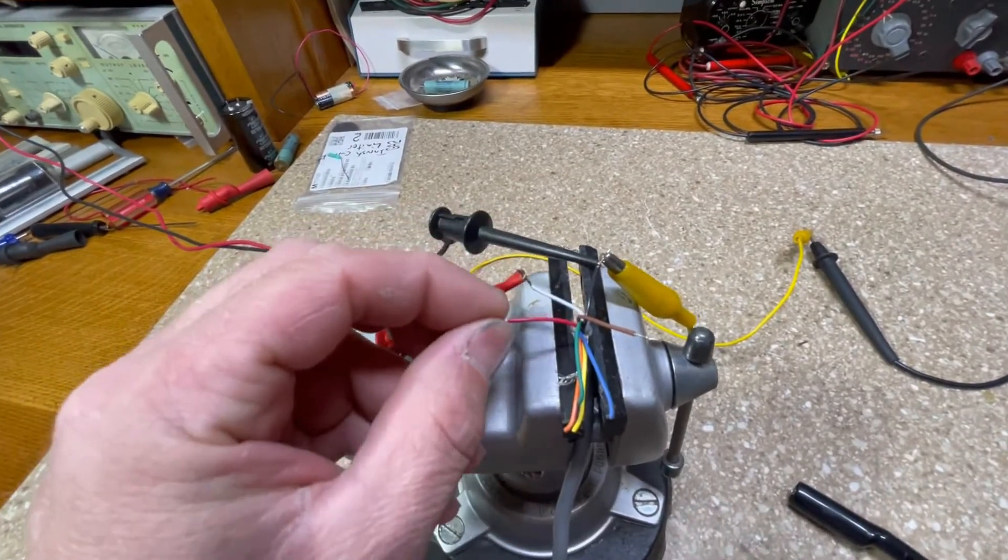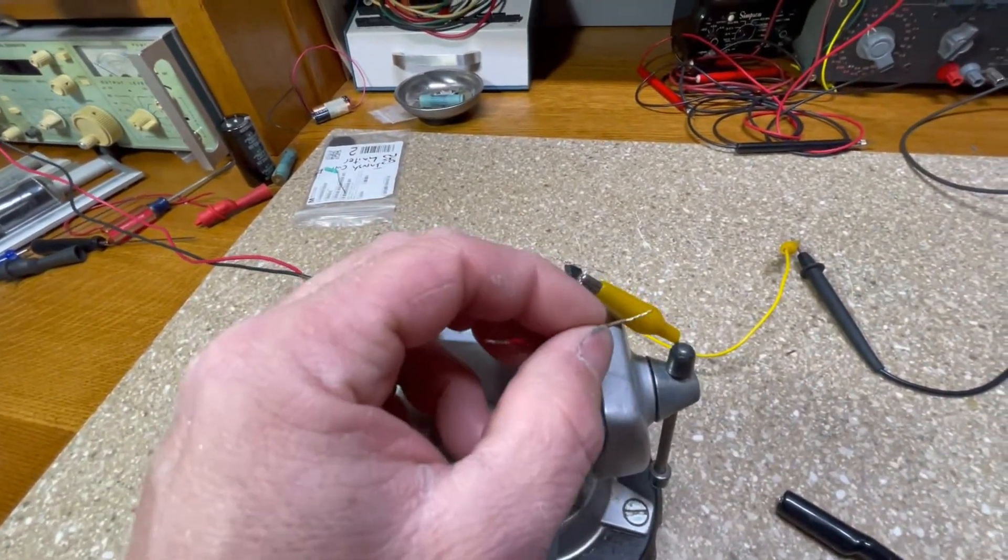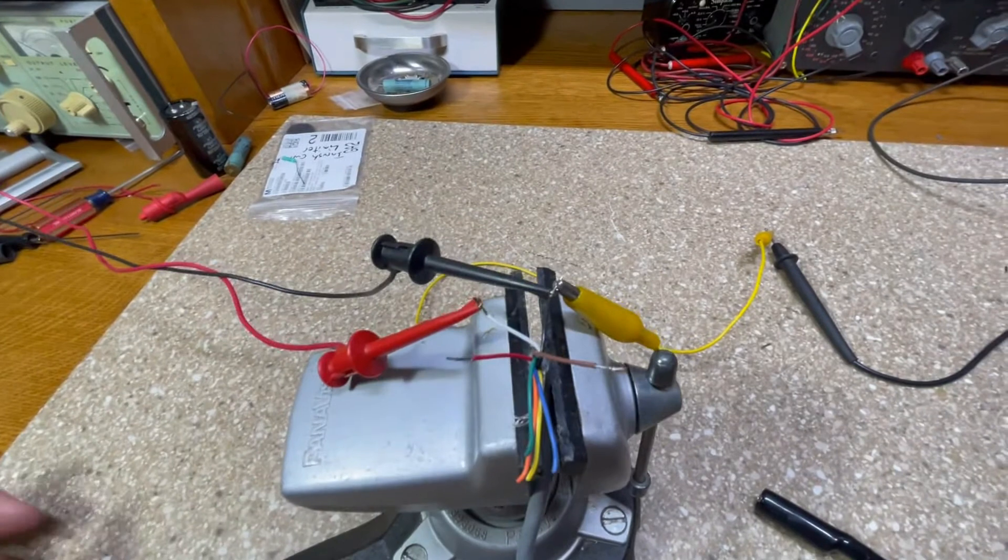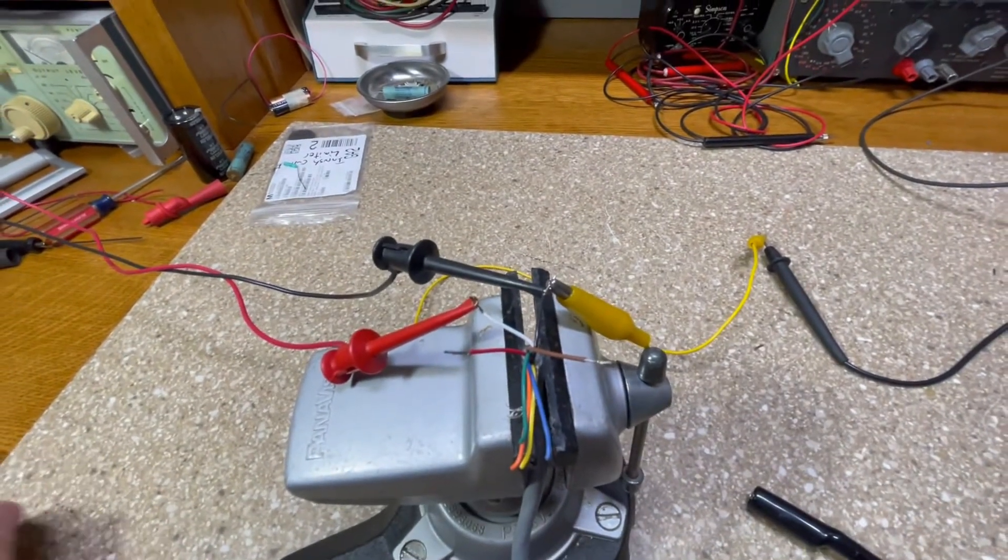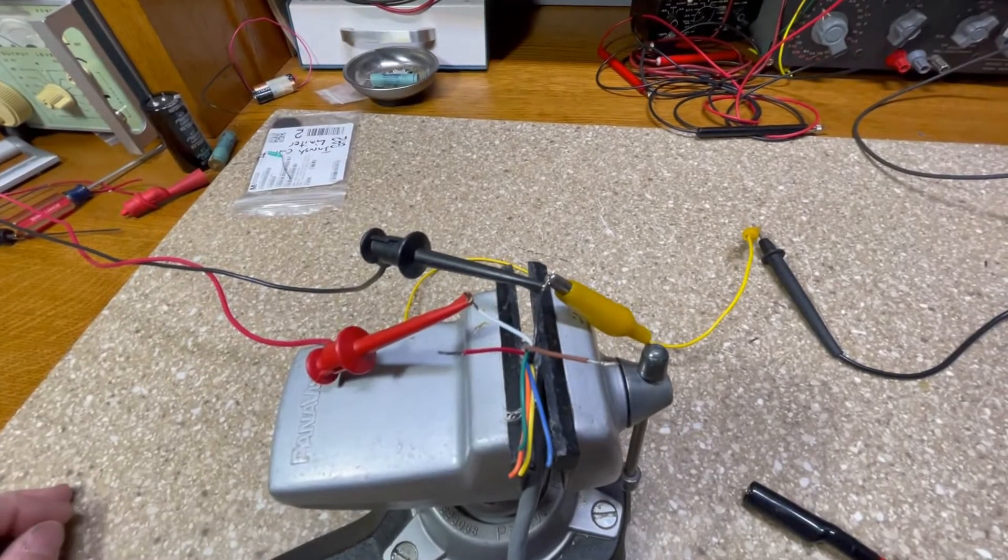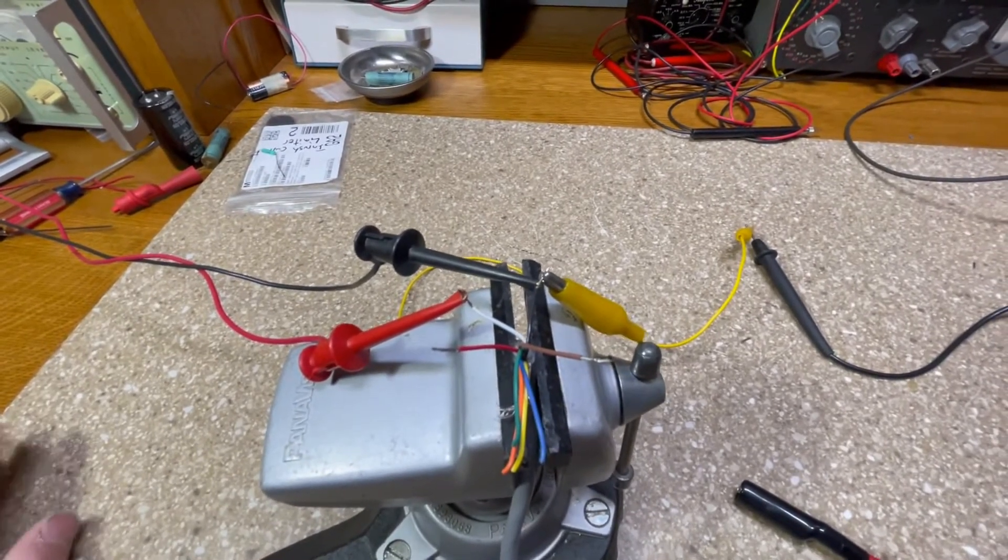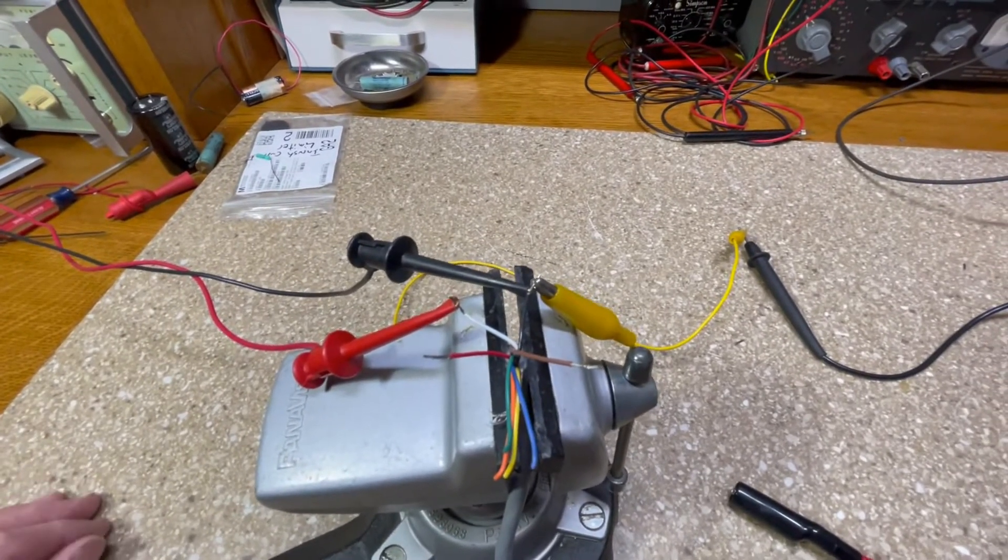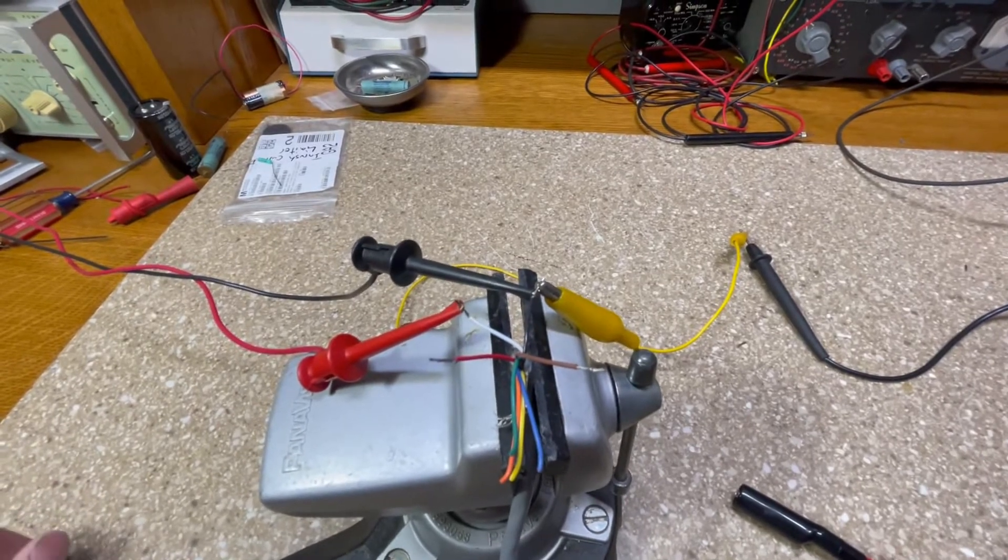Right here the red wire is my A channel and the brown wire is my A-not. It's the complement of the A, basically the inversion. So when the A is high, the A-not's low and vice versa. They're never at the same logic state at the same time.